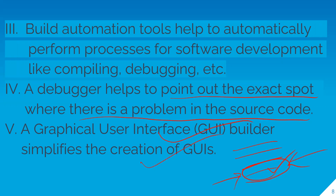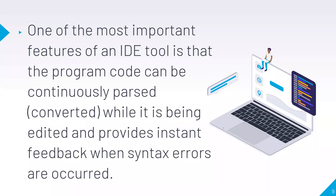Build automation tools can automatically compile code and identify errors, and if we want to see exactly where a problem is, we use the debugger. One of the most important features of an IDE tool is the build automation tool. Using the IDE, source code can be compiled and converted automatically.